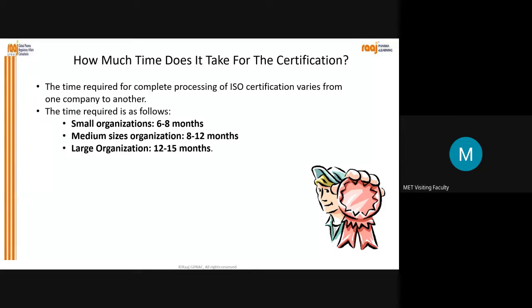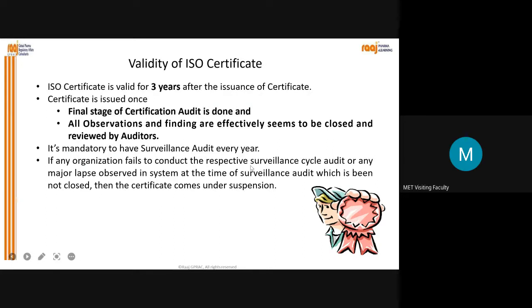The cost of certification depends on all these different factors. How much time does it take? Small organizations: six to eight months; medium-size: eight to twelve months; large organizations: twelve to fifteen months. Once you get the certificate, it is valid for three years. After Stage 2 audit, all observations and findings must be effectively closed and reviewed by auditors. Once you get the certificate valid for three years, every year you have to have a surveillance audit. If any organization fails to conduct the respective surveillance cycle audit, or if a major lapse is observed in the system during surveillance that is not closed, the certificate comes under suspension.